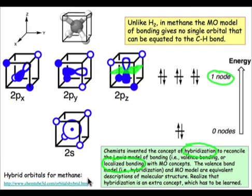Hybridization is a convenient concept to think about how we can reconcile the molecular orbital bonding picture and the valence bonding picture, and if you'd like to remind yourself about what those hybrid orbitals look like, you can take a look at this ChemTube3D site.